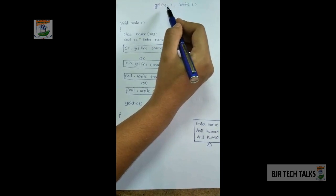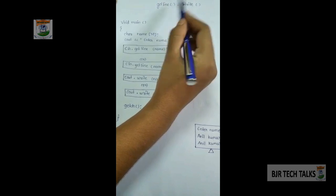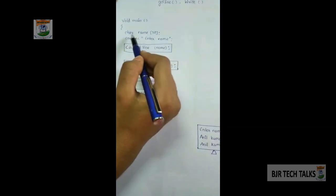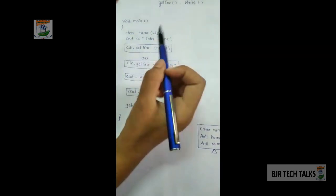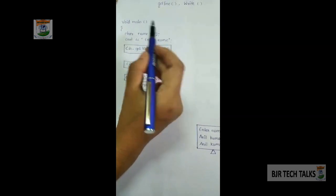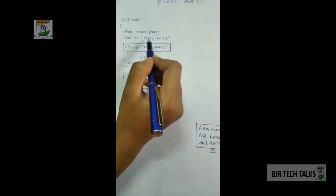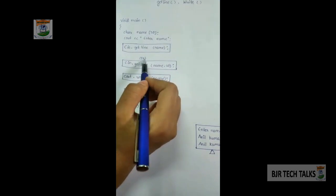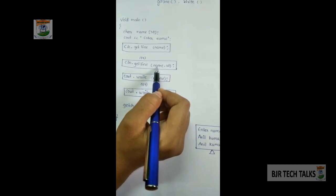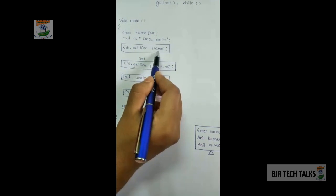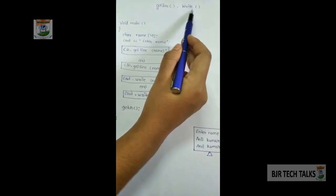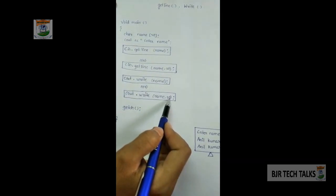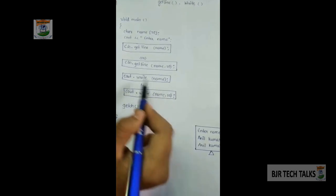In this example, the getline function is used to take a line or word as input, and the write function is used to output a line or word. In void main, character name[20] is declared as the data member, since getline and write work with a group of characters — a string. We output the prompt 'Enter name.' The getline function can be used in two ways: cin.getline(name) or cin.getline(name, 20), where 20 is the size. Similarly, write has two ways: cout.write(name) or cout.write(name, 20).